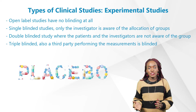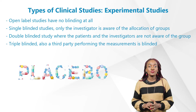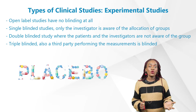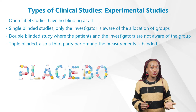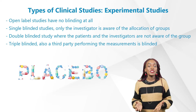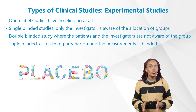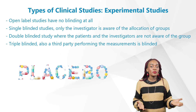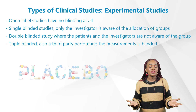There are different levels of blinding: open-label studies, which do not have any blinding at all; single-blinded studies, where only the investigator is aware of the allocation of groups; double-blinded studies, where both the patients and the investigators are not aware of which group they are in; and even triple-blinded studies, where a third party performing the measurements is also blinded to the treatment allocation.